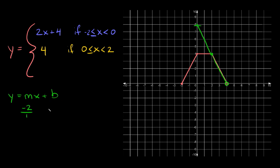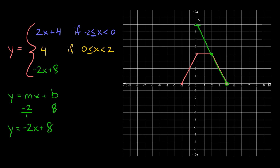So the y-intercept would be positive eight. If we plug those numbers in, we get that y equals — negative two over one is just negative two — so we can write that as negative 2x plus 8. The equation of this line is y equals negative 2x plus 8.